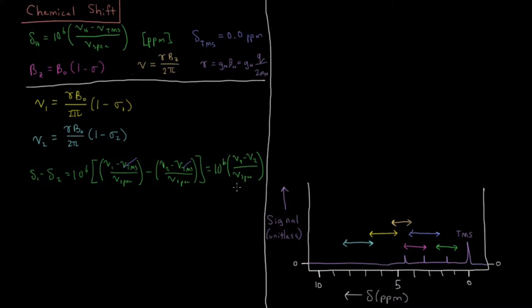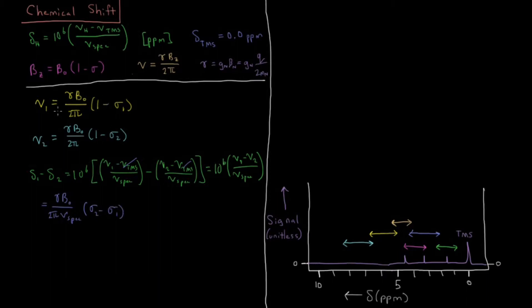Continuing forward, ν1 and ν2 both share the prefactor γB0 over 2π, so we pull that out. The difference between the two transition frequencies then gives us the difference between (1 − σ1) and (1 − σ2). Expanding: (1 − σ1) − (1 − σ2) — the ones cancel — leaving σ2 − σ1. So substituting these values in, we get σ2 − σ1, and the 10^6 factor remains.